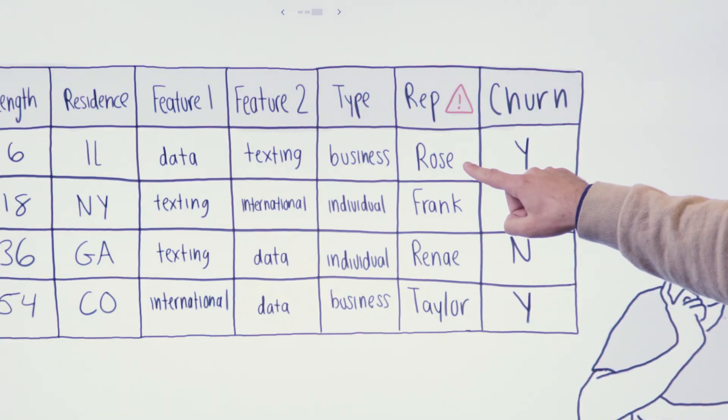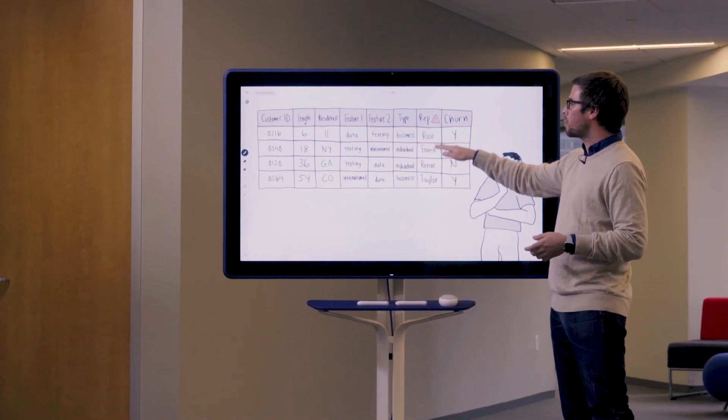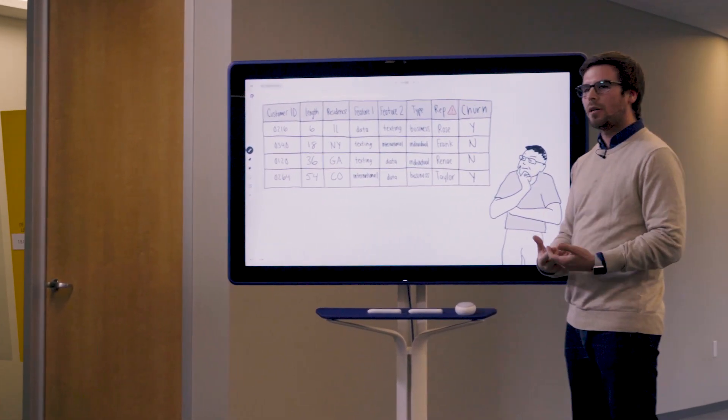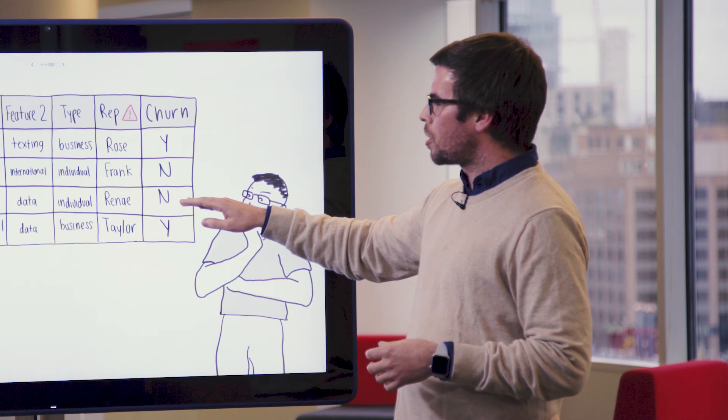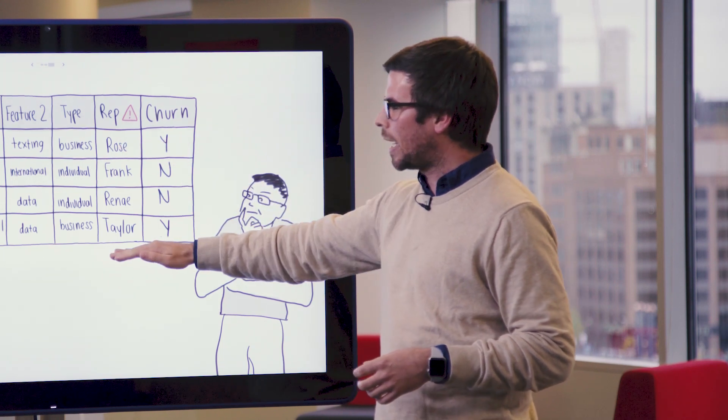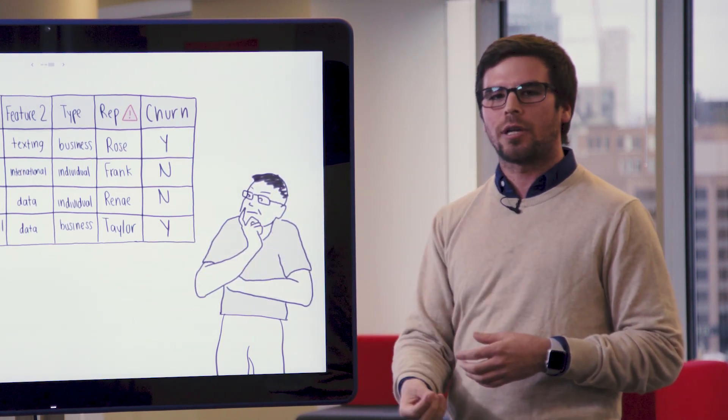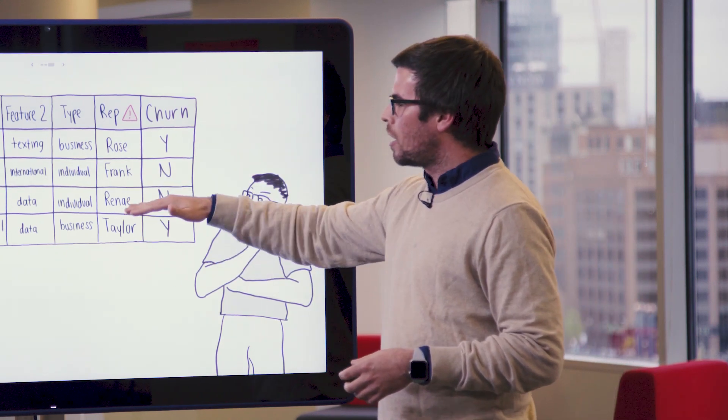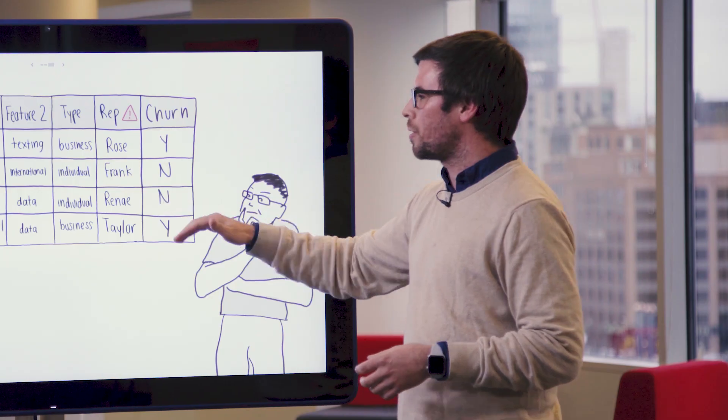In this case, Rose and Taylor both work in the retention department and therefore they're commonly associated and they're appearing here next to customers who ended up churning. This is problematic because the model will start to associate the name Rose and the name Taylor with customers that have a high risk of churning and it will start to assign lower risk to names like Frank and Renee that didn't result in customers that churned.